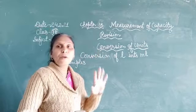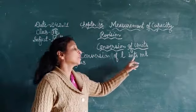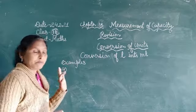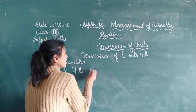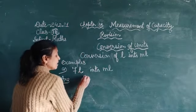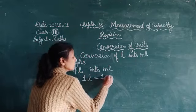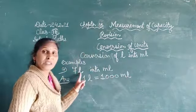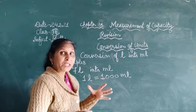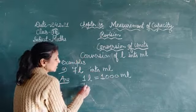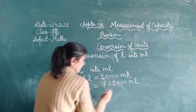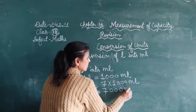Now let's see the conversion of units — conversion of litres into millilitres. Example A: 7 litres converted into millilitres. First we know that one litre equals one thousand millilitres. So, seven litres equals seven multiplied by one thousand millilitres, which equals seven thousand millilitres.